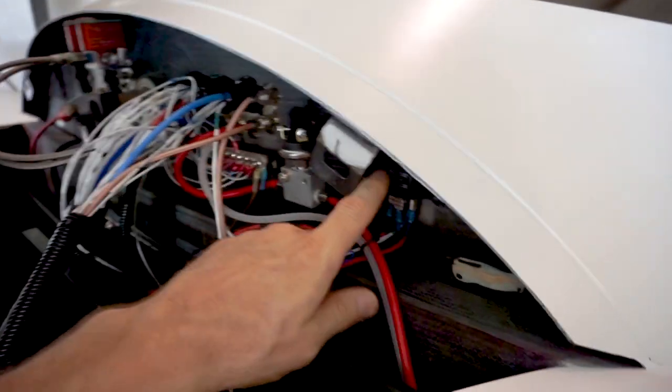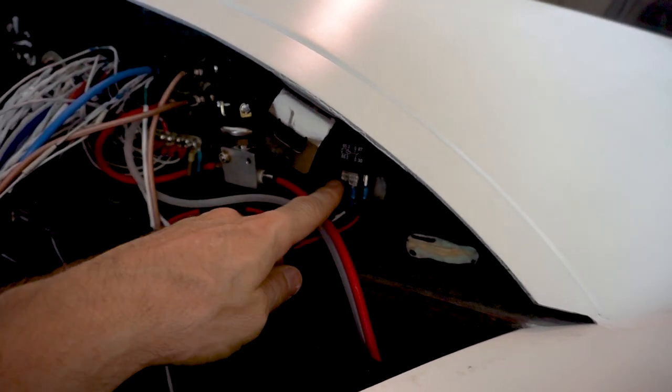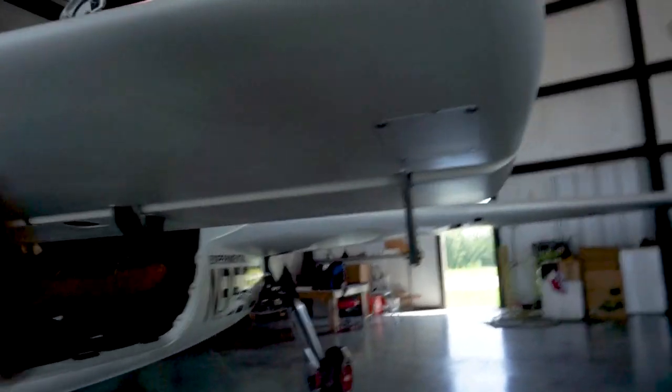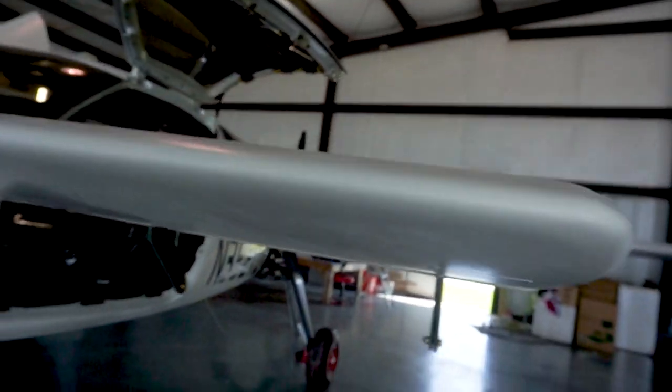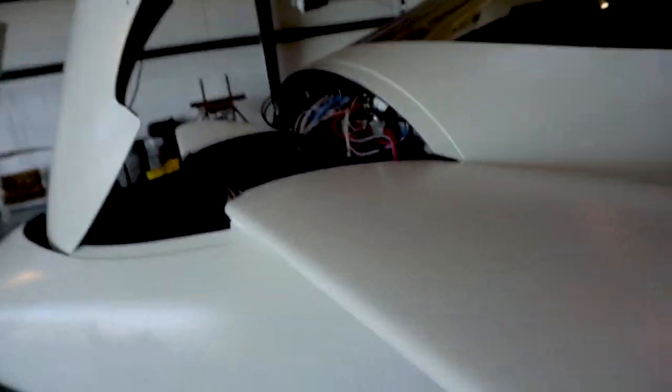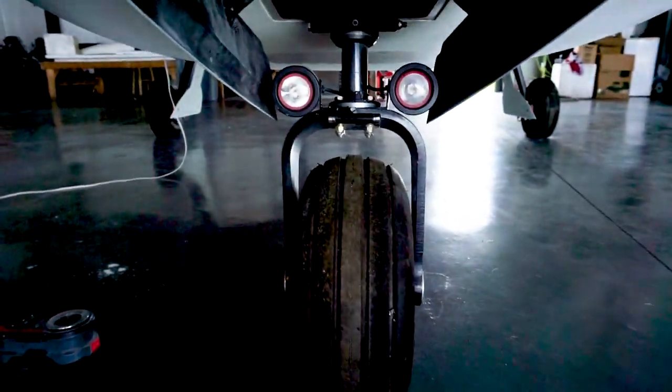That little relay under there is for the heater for the pitot system, which lives inside the foreplane. We have a magnetometer hidden up in under here that gives us our heading direction.